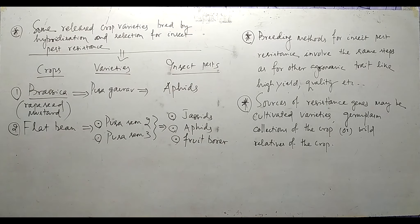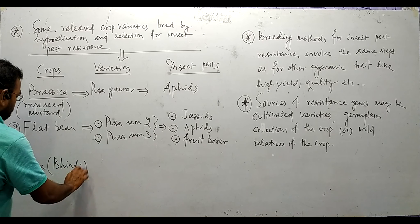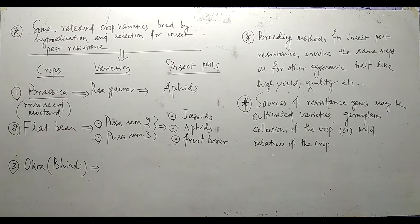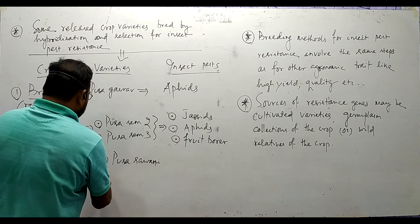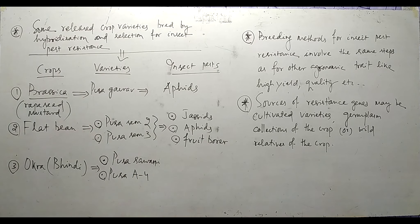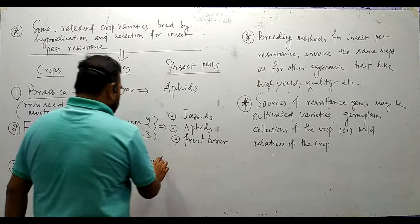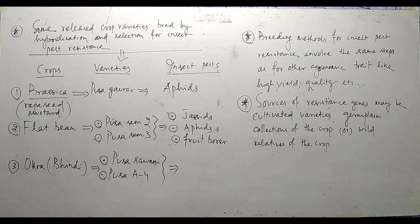Third example: Okra, also known as Bhindi. The varieties are Pusa Sawani and Pusa A4. These two varieties of Okra are resistant to shoot and fruit borer.